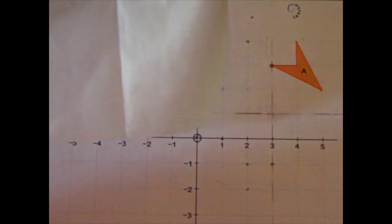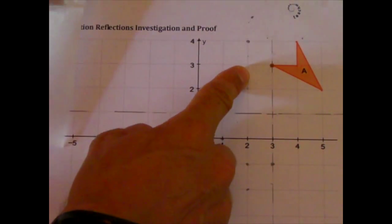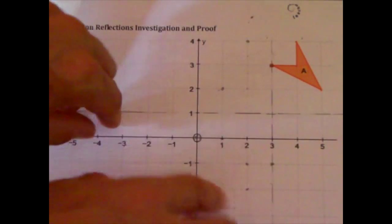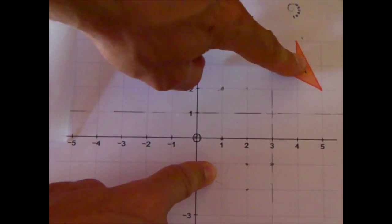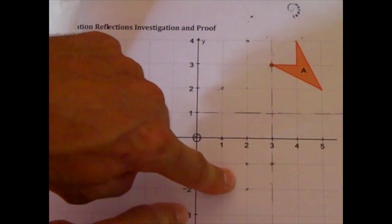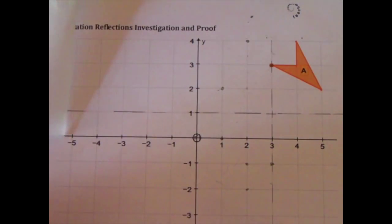I'm going to reflect first in one, the vertical, then in the horizontal. And this last shape where it ends up, is there a single rotation that gets me from there to the final second reflection? That's the task.